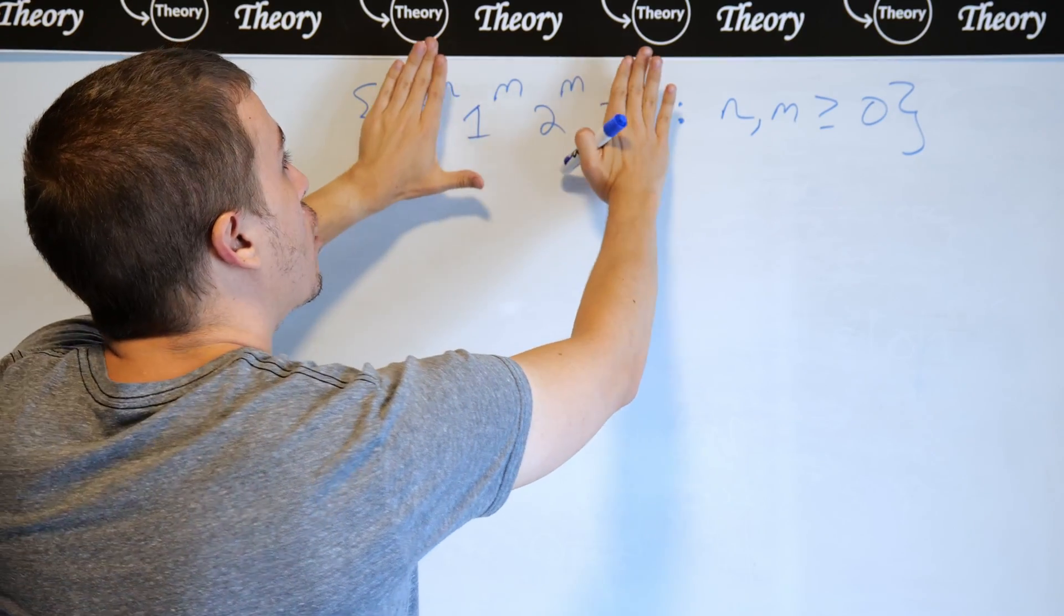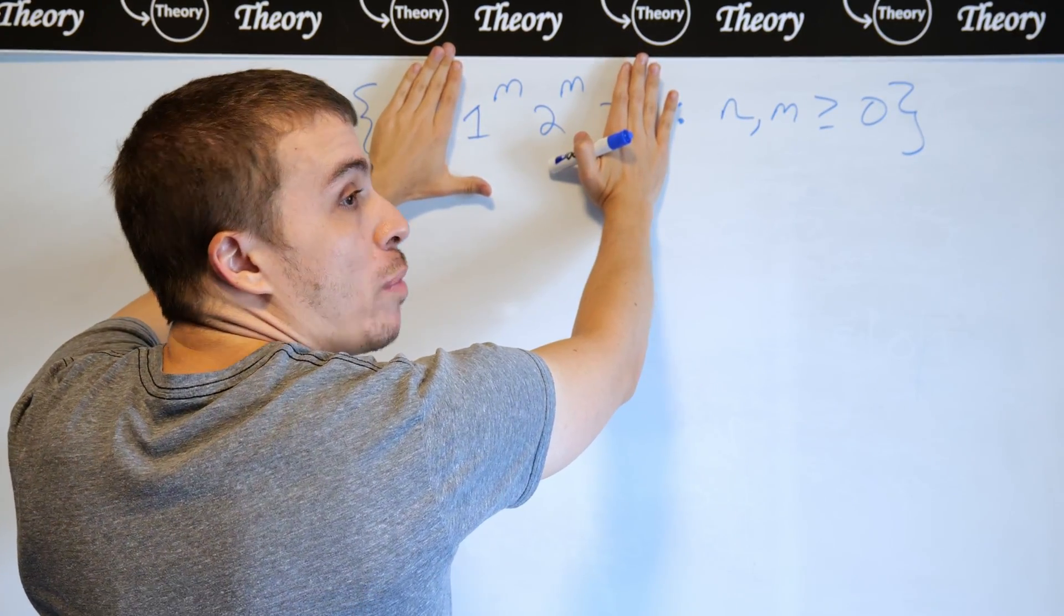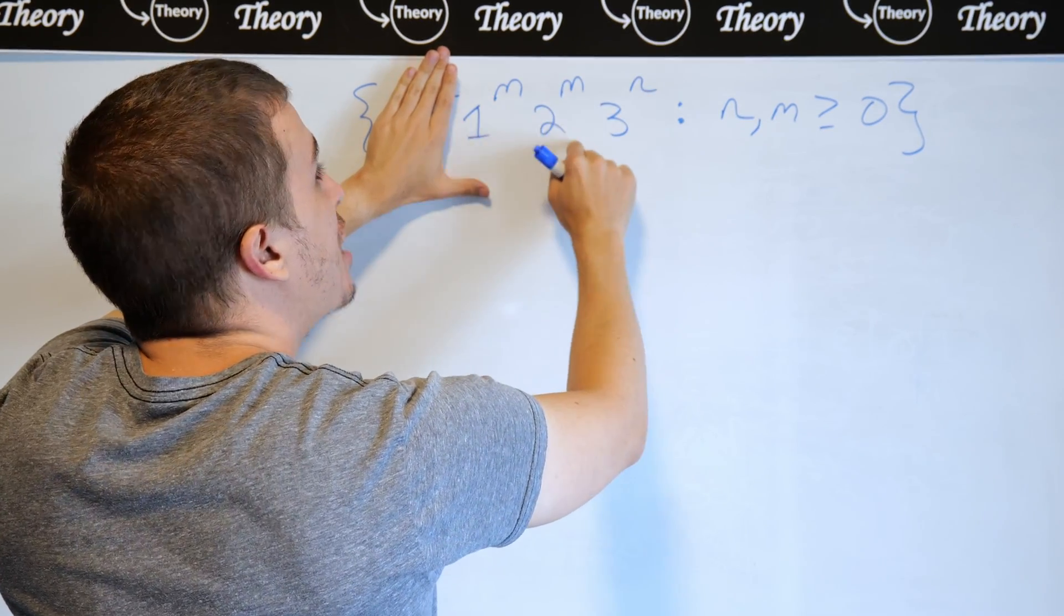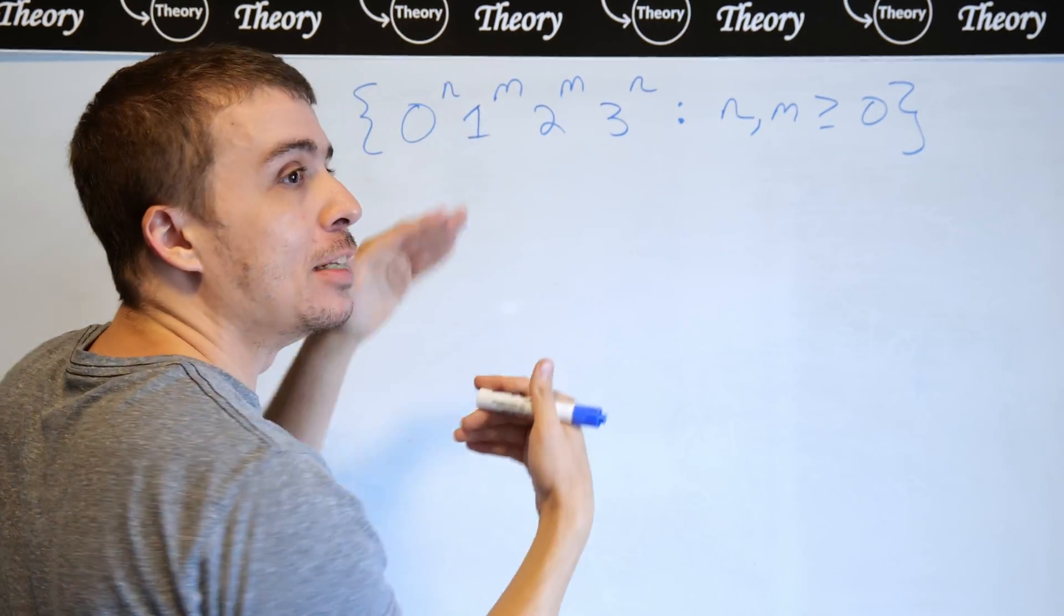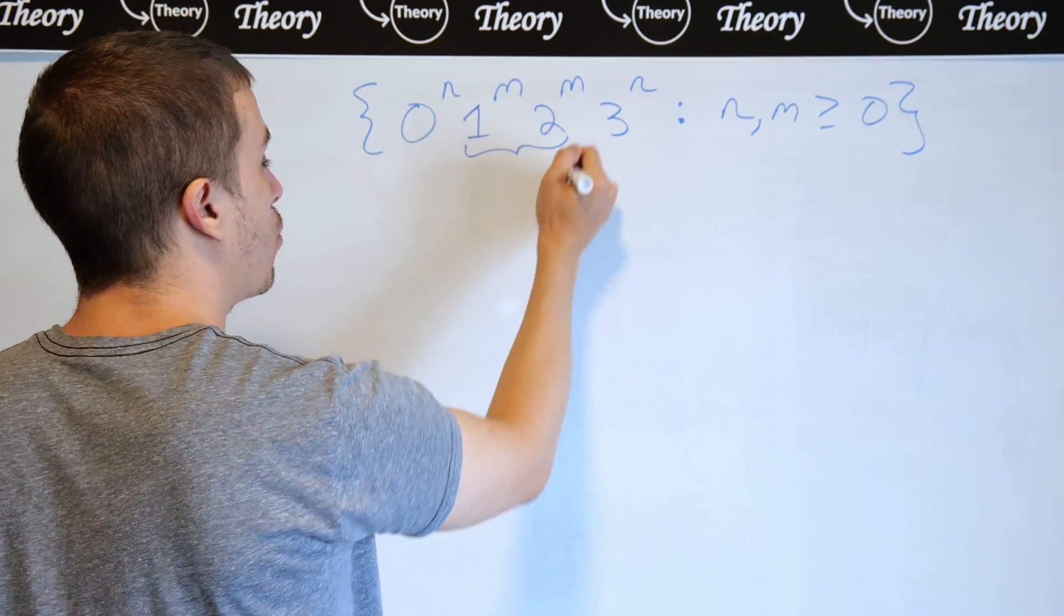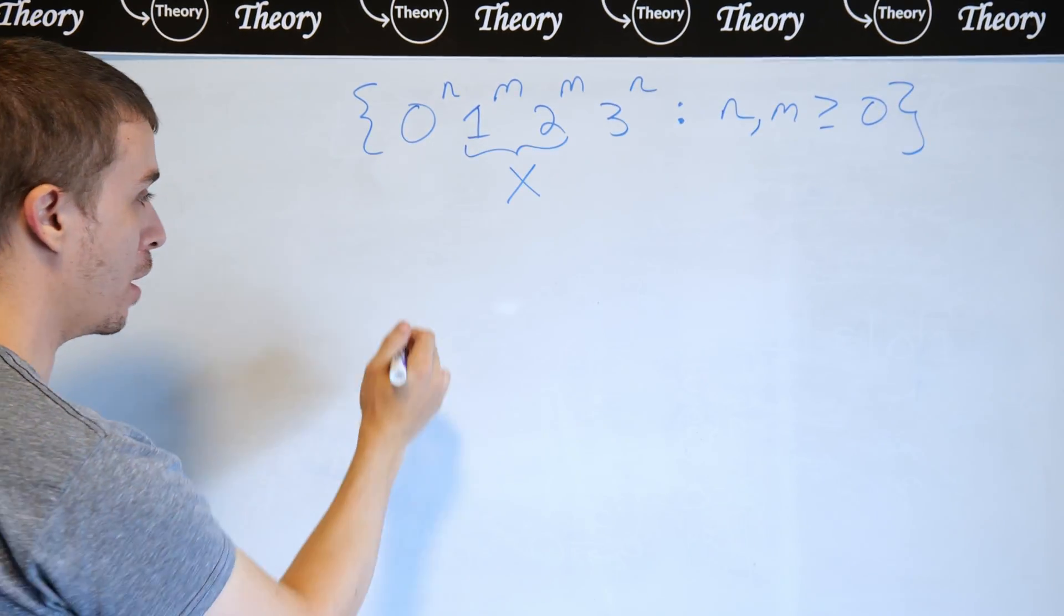So the m's, if we look at them in isolation, we can easily make a context-free grammar for that because we can just make a one on one side, a two on the other side, and then just quit at some point with the empty string. For this part, I'm going to have a variable called x make that part.